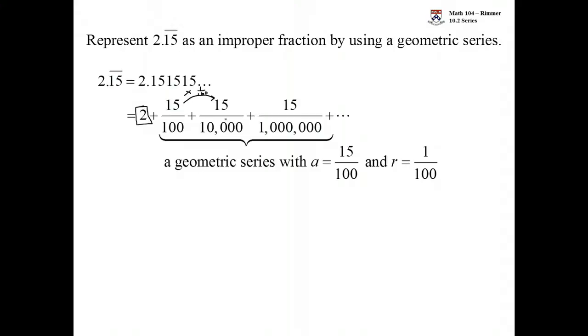This ratio that we have as the multiplier from one term to the next, that's called r. When r is less than 1 in absolute value, the geometric series will converge.